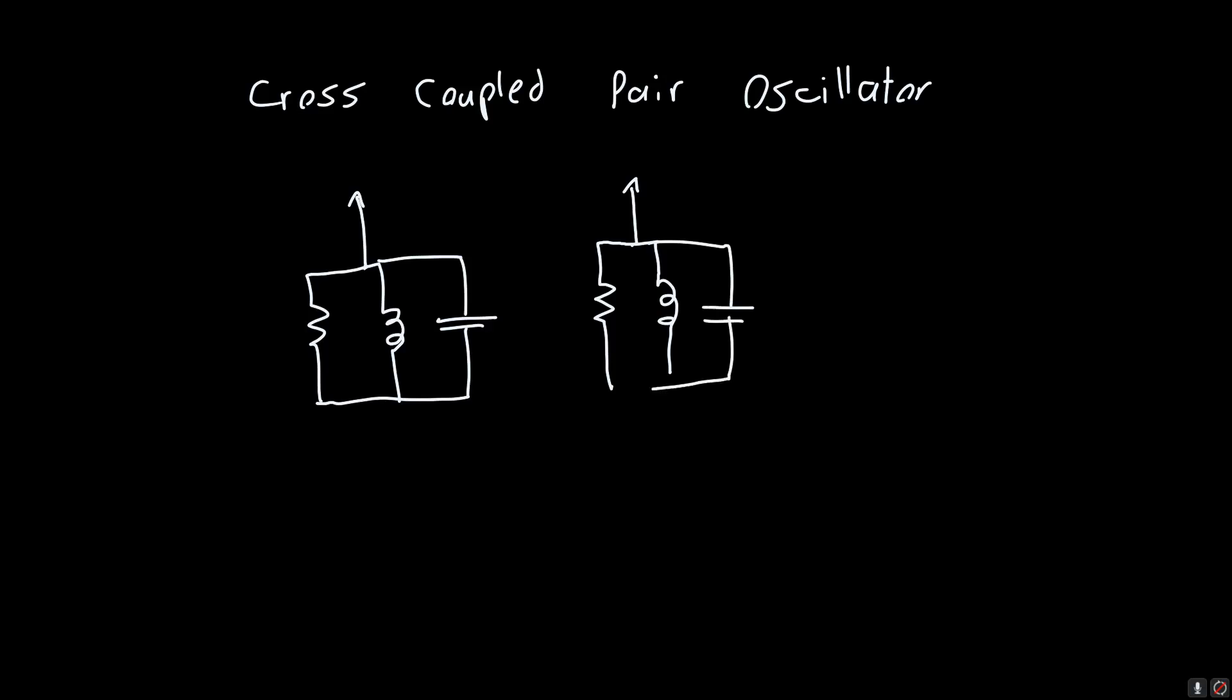And we said if you connected this to a cross-coupled pair, so here it's just a simple NMOS cross-coupled pair, and we said that if these two transistors are matched, if we have R equals 1 over GM times 1 plus 1 over GMRO, or approximately R is just equal to 1 over GM, then we said that this circuit would oscillate.